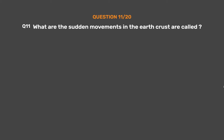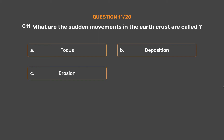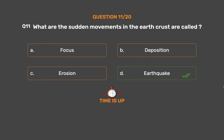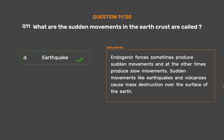Question No. 11: What are the sudden movements in the earth's crust called? Option A: Focus. Option B: Deposition. Option C: Erosion. Option D: Earthquake. The correct answer is Option D: Earthquake. Endogenic forces sometimes produce sudden movements and at other times produce slow movements. Sudden movements like earthquakes and volcanoes cause mass destruction over the surface of the earth.